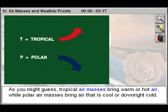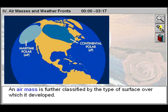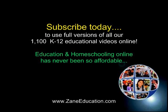As you might guess, tropical air masses bring warm or hot air, while polar air masses bring air that is cool or downright cold.